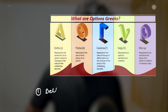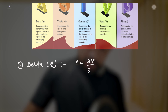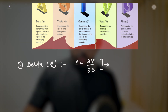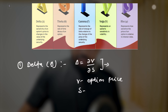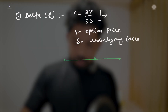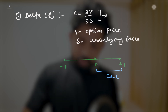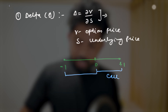The formula for delta is: delta = dV/dS, where V is the option price and S is the underlying asset price. In terms of interpretation: call option delta ranges from 0 to 1, and put option delta ranges from negative 1 to 0.